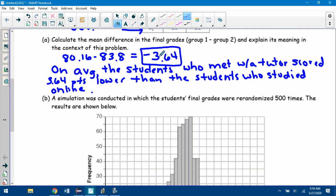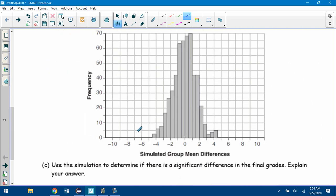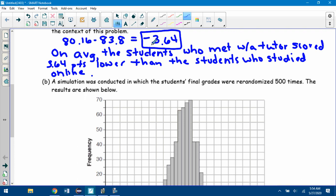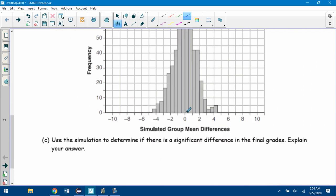We want to know now, is this difference of negative 3.64 significant? Use the simulation to determine if there's a significant difference in the final grades. Explain your answer. There's kind of two ways to do it. So our difference was negative 3.64. We can't see exactly where negative 3.64 is on here, but if you look, it's kind of going by 0.5s. So negative 3.64 would be somewhere around negative 3.5 and less. So just these two little bars. This one I'd say, if you look at this scale, is about 6. This one's maybe 3. So it looks like there's maybe a total of 9 people represented that are negative 3.5 or less.